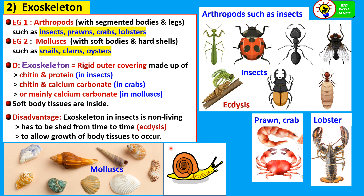Another group with the exoskeleton are the mollusks. Think of snails — mollusks have soft bodies on the inside but hard shells, and they live inside these shells. The snail can come out of the shell and crawl around, withdrawing back when resting. Mollusks include snails, clams, oysters, and scallops, which also have a very hard outer covering called the shell.